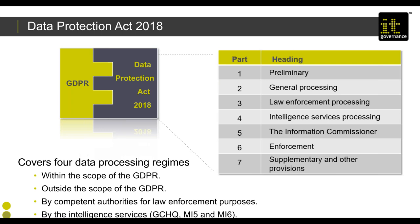Looking at the structure of the Data Protection Act, it covers four different processing regimes: within the scope of the GDPR, outside the scope of the GDPR, processing by competent authorities for law enforcement purposes, and processing by the intelligence services — GCHQ, MI5, and MI6. The Act has seven parts: Part 2 relates to GDPR and general processing, Part 3 is law enforcement processing, and Part 4 covers processing by the intelligence services. It is Part 3 that we concentrate on today.